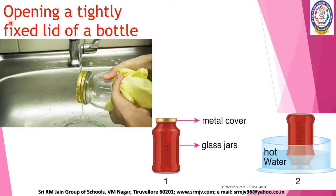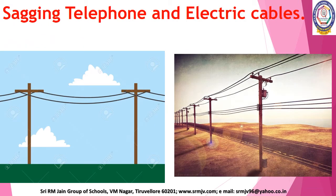Next: opening a tightly fixed lid of a bottle. To open a lid tightly fixed on a bottle, the mouth of the bottle is immersed in hot water. The solid lid expands on heating, which helps in the loosening of the lid. Sagging telephone and electric cables: in winters, electric and telephone cables contract. Therefore, these are left a little loose between the posts to prevent them from breaking.